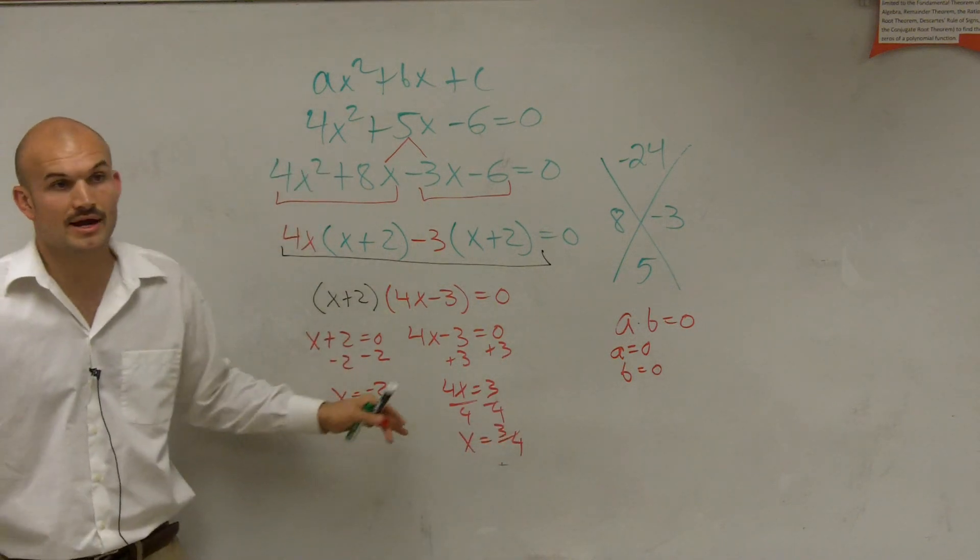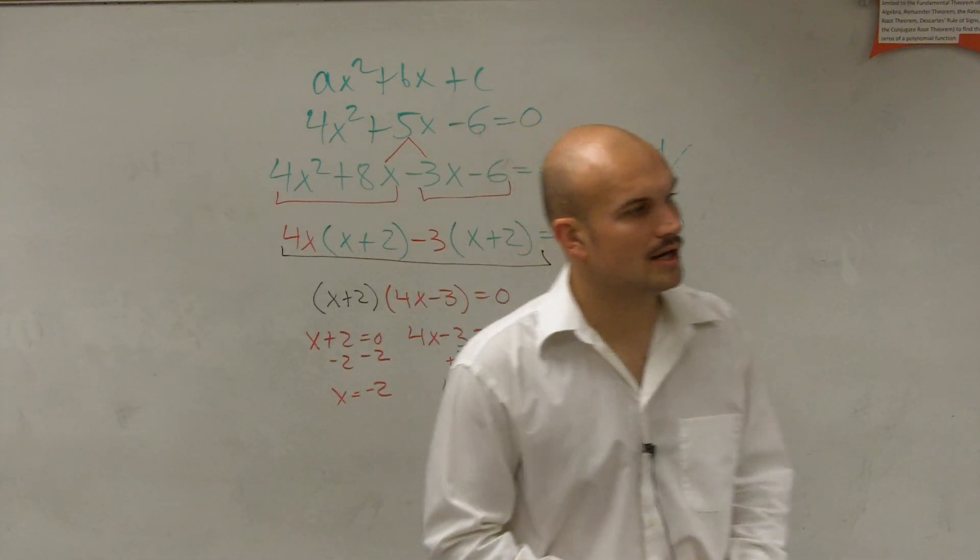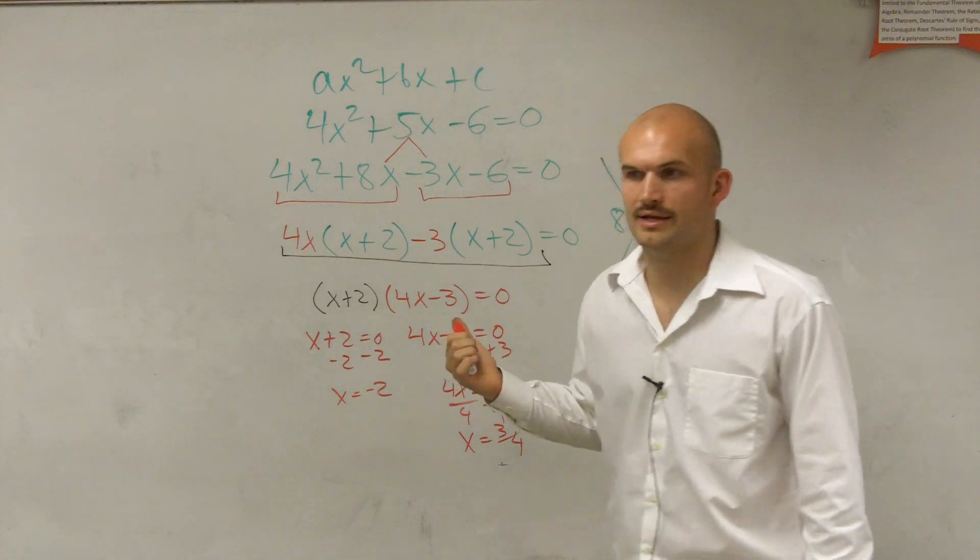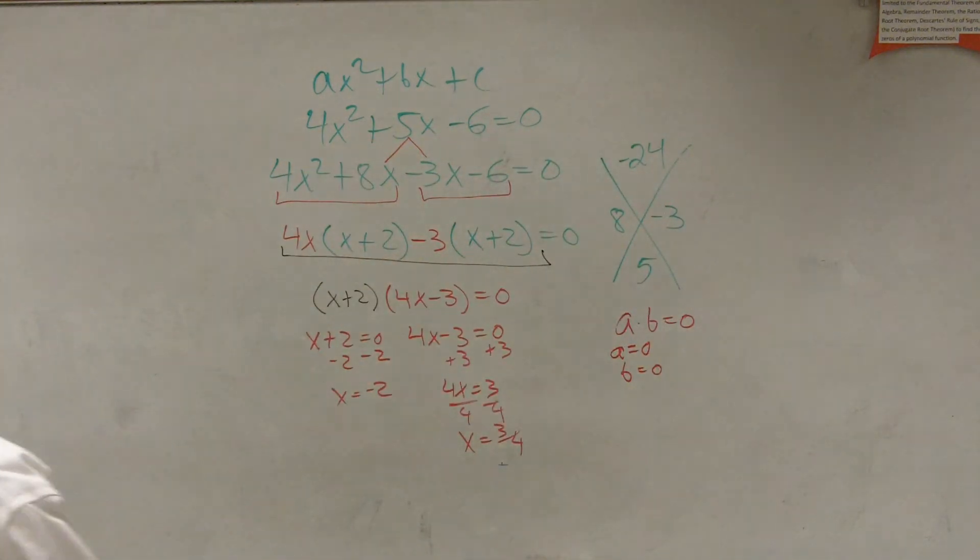So we have two answers, right? And by looking at a graph, it's possible for our parabola to have two different answers. All right, any last questions on that? It's a process. It's a process, and it's a process.